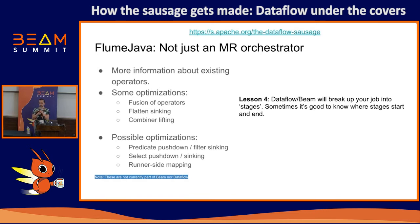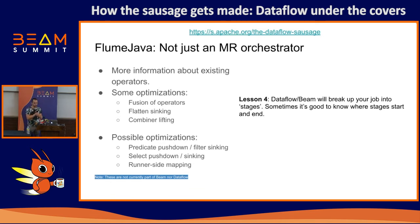These optimizations are fairly simple, but once you have more information about the operations being performed you can do more. We don't currently do this, but ideally if you're mapping data and later filtering, we could apply the filter earlier automatically since it reduces data movement — without the user having to think about it. There's a talk by Andrew and Brian on relational Beam that covers what other optimizations they'd like to develop.